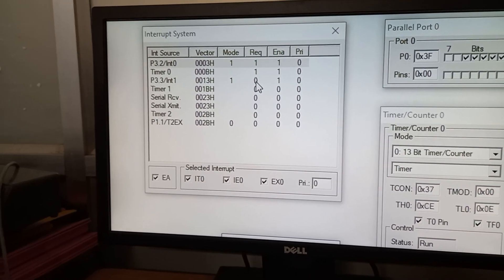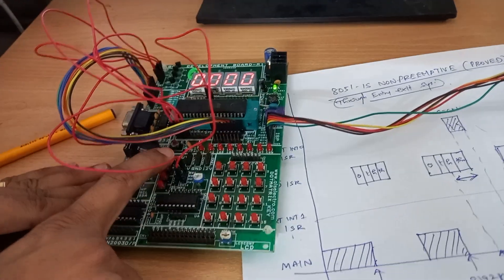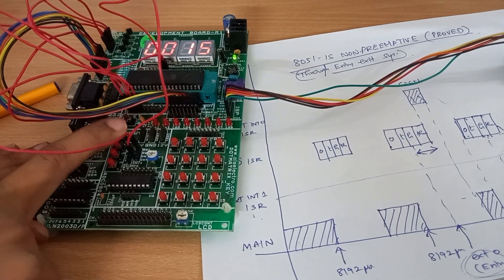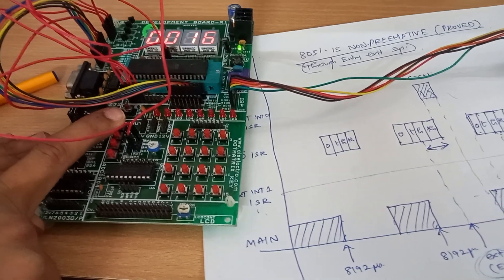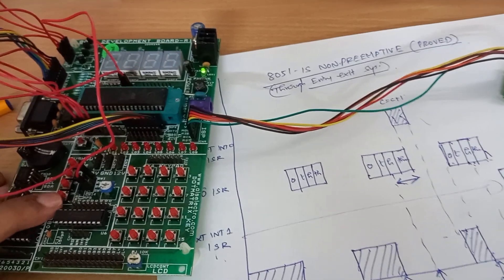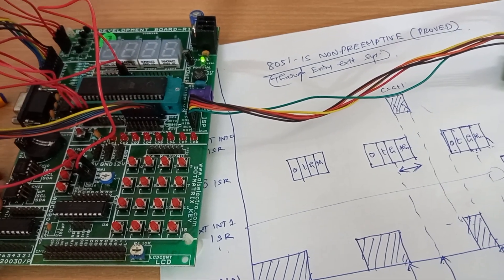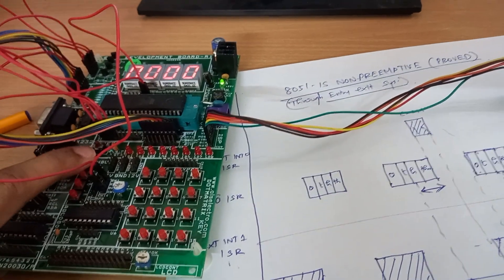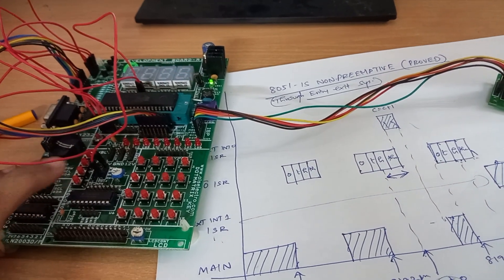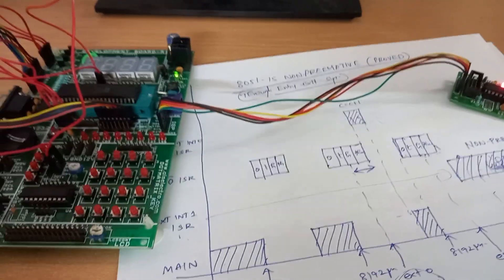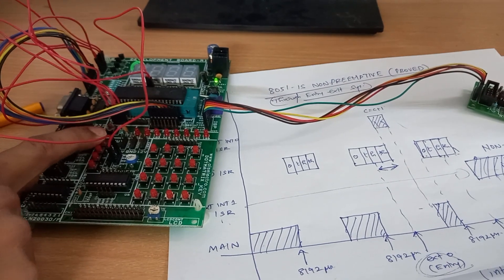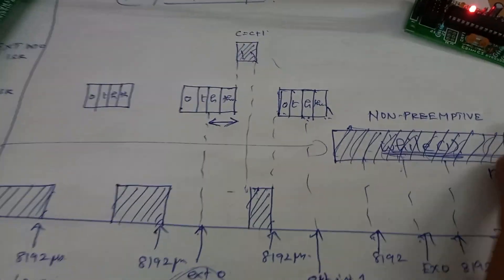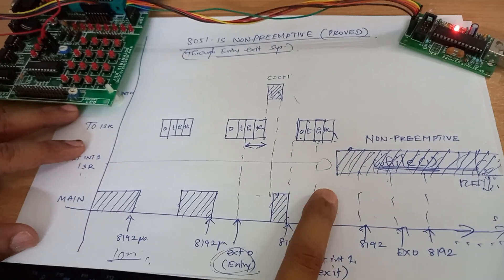This can be experienced on the kit also. Resetting the kit and incrementing 1, 2, 3, 4, 5, 6 — every key press increments, justifying external interrupt 0 is running, and display showing 16 justifies timer 0 ISR is running. But when decrementing, the display goes off and even pressing entry does not work because of the while loop — the program never returns from the ISR. Timer 0 and external interrupt 0, having higher priority, never get executed. This justifies that AT51 is non-preemptive.